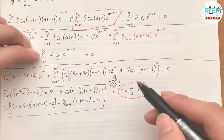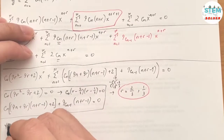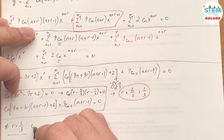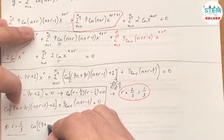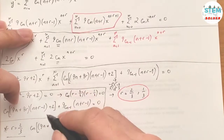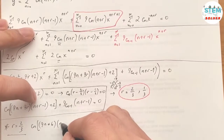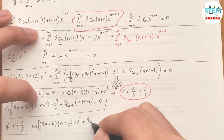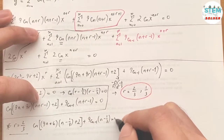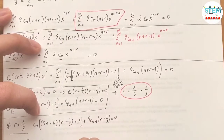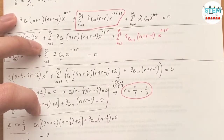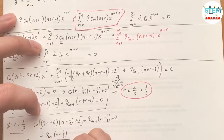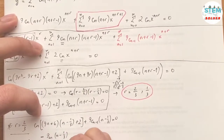For y₁, we use r = 2/3. Plugging into the recurrence relation: cₙ[9n + 9(2/3)][n + 2/3 − 1] + 2 + 9cₙ₋₁(n + 2/3 − 1) = 0, which simplifies to cₙ(9n + 6)(n − 1/3) + 2 + 9cₙ₋₁(n − 1/3) = 0. Solving for cₙ gives: cₙ = −9cₙ₋₁(n − 1/3) / [(9n + 6)(n − 1/3) + 2].